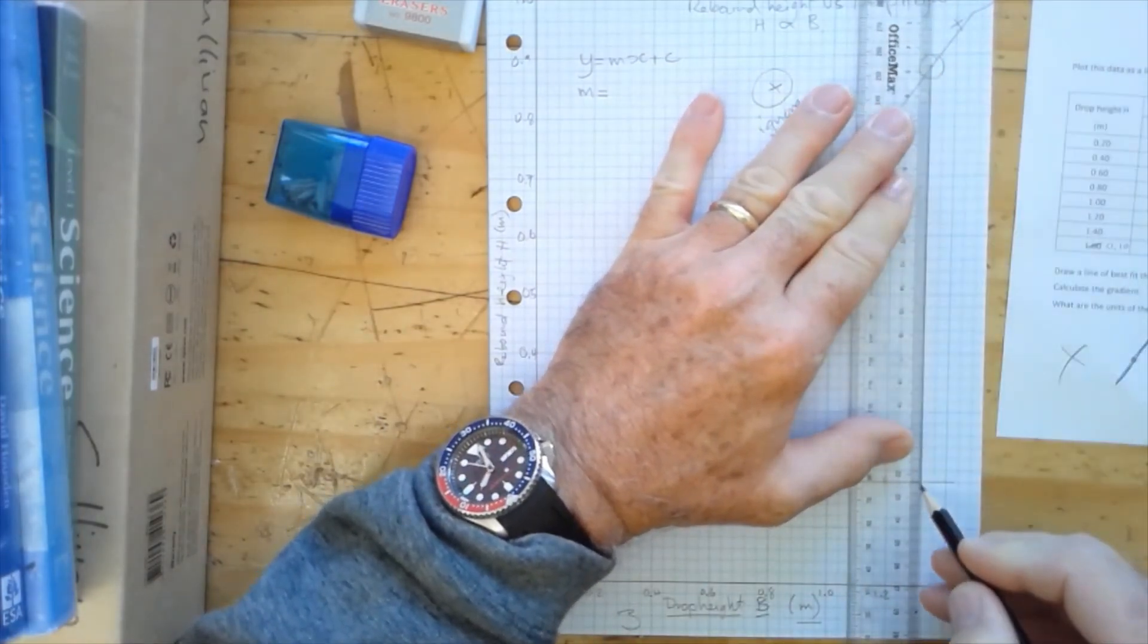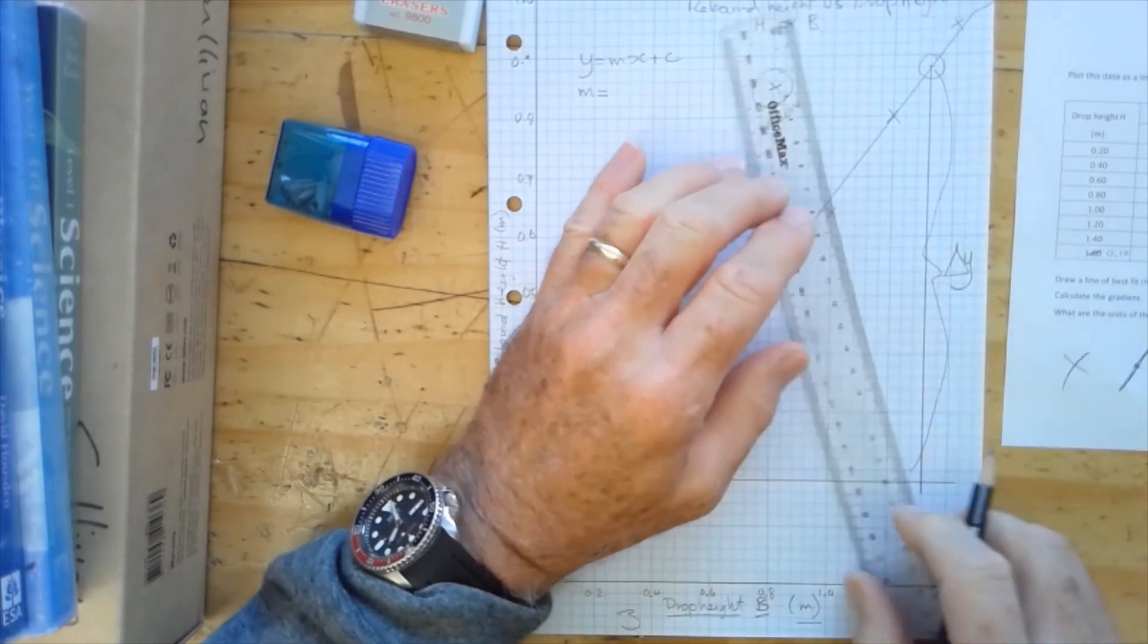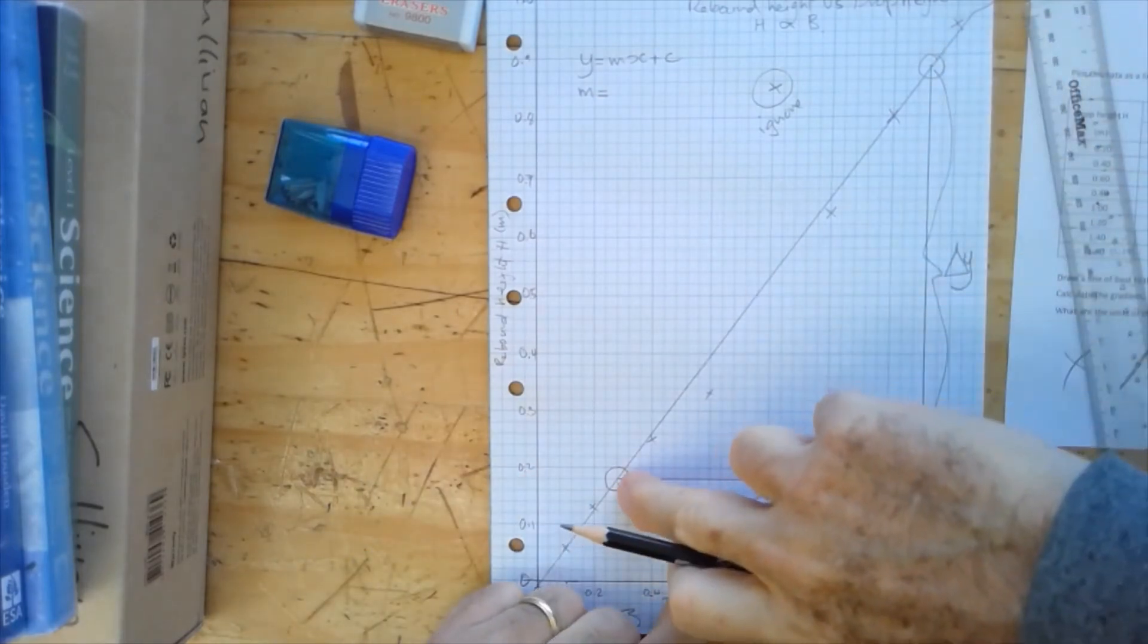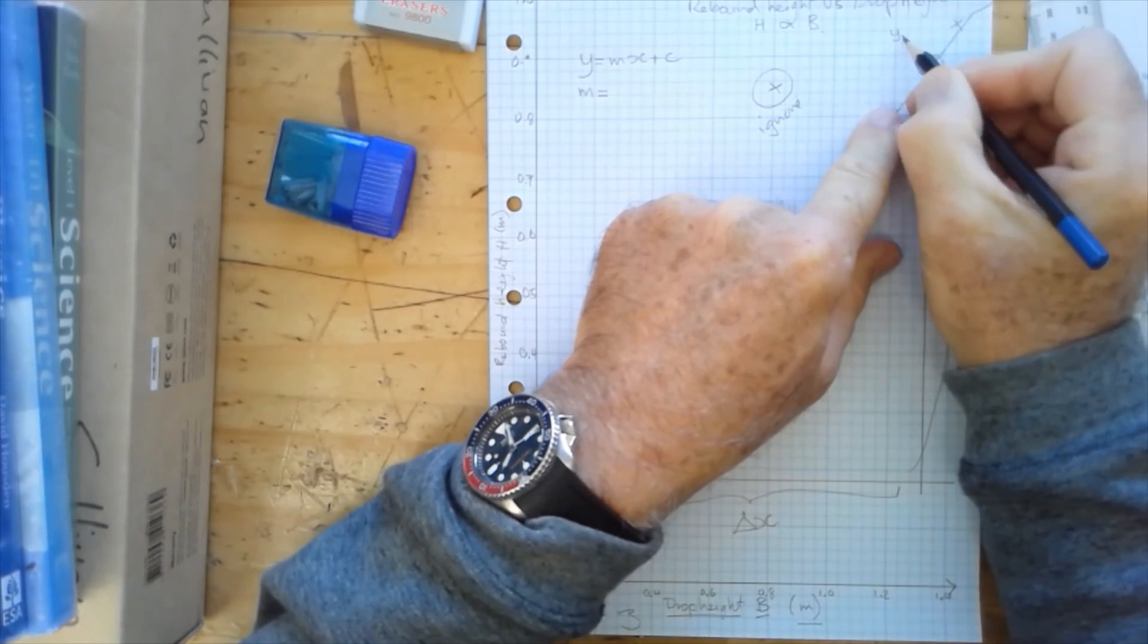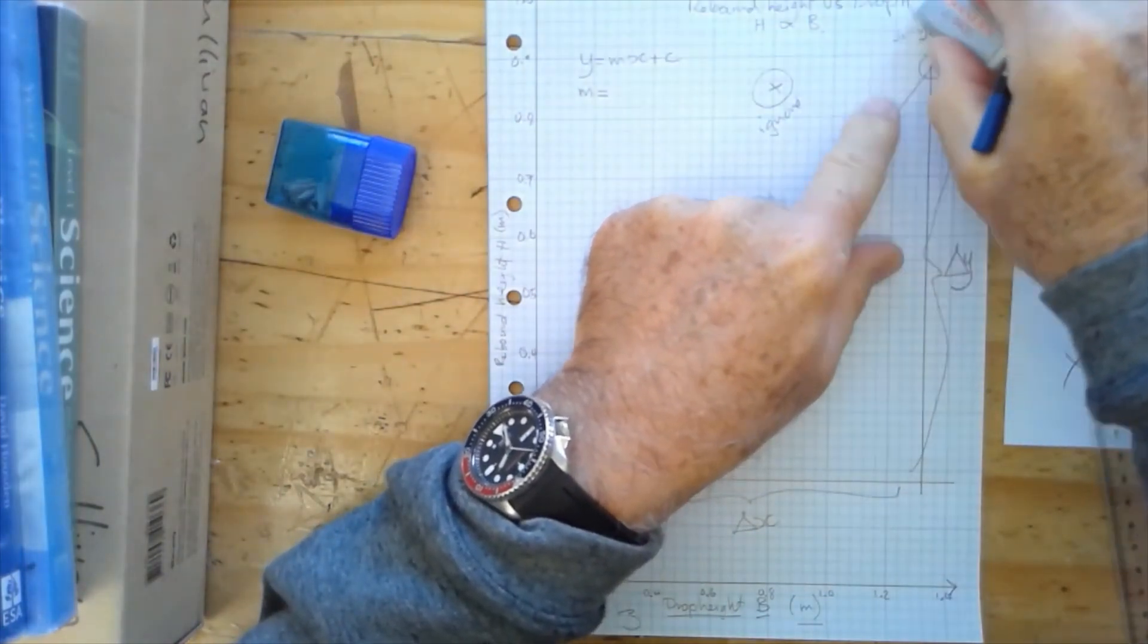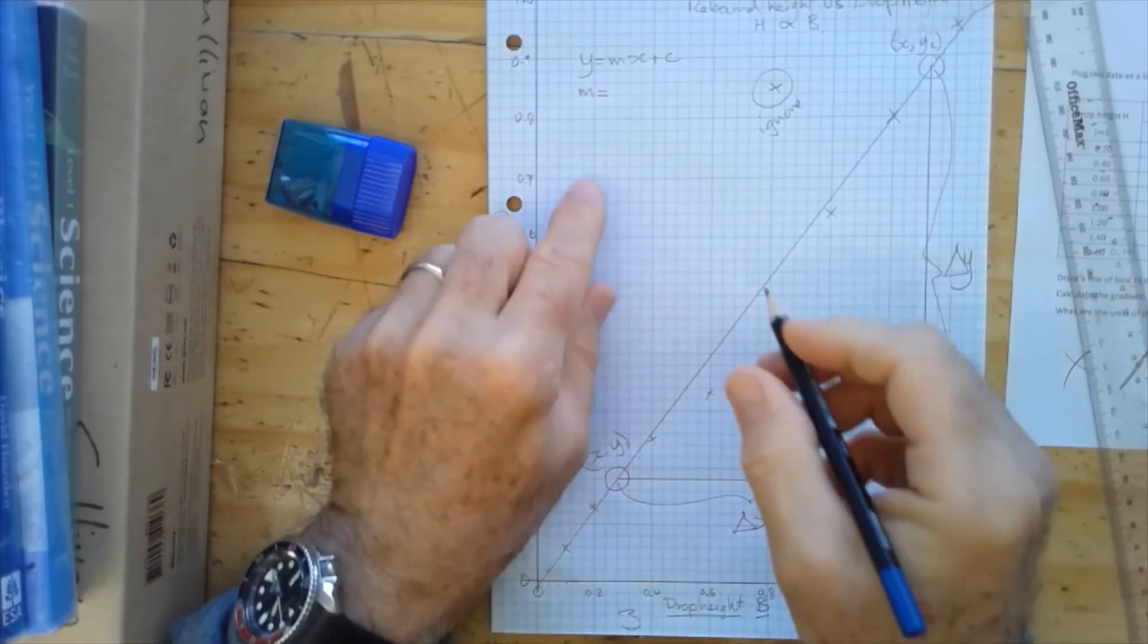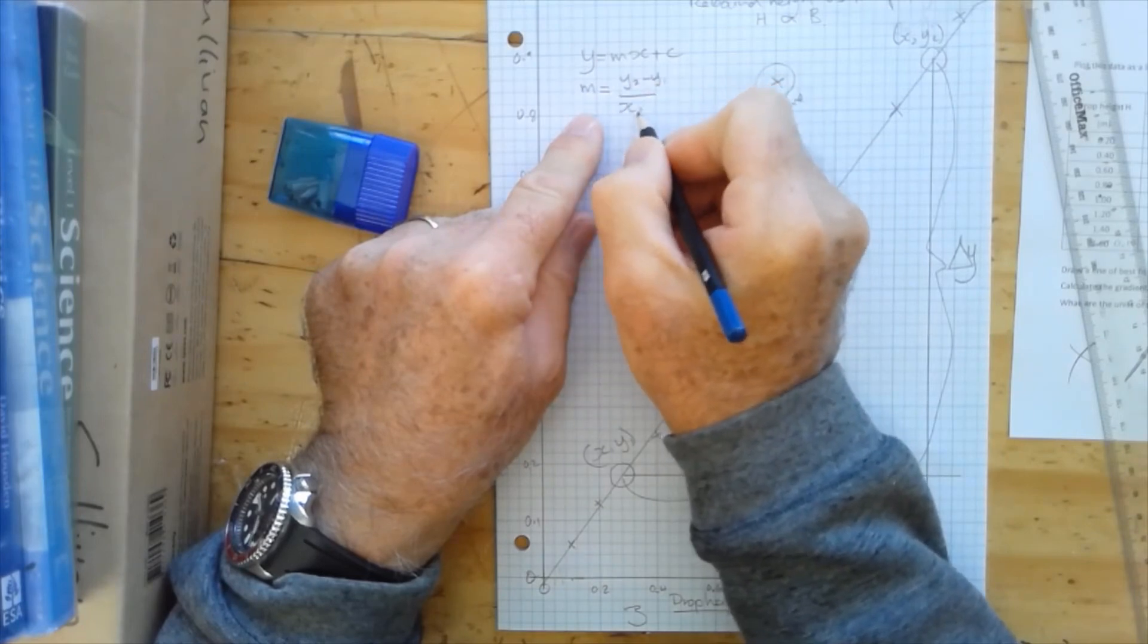And we've got now, we have this length here is delta y, and this length here is delta x. So our gradient is delta y over delta x. And this point here is y2 minus, sorry, this point is, oh I've made a mistake there. This point is x2, y2, and this point is x1, y1. So our gradient is y2 minus y1 divided by x2 minus x1.